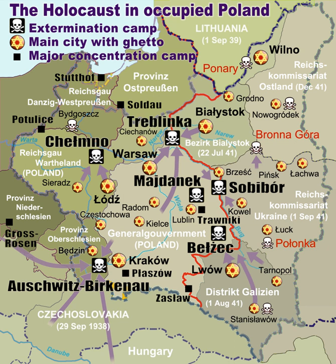Nazi Germany built extermination camps, also called death camps or killing centers, during the Holocaust in World War II, to systematically murder millions of Jews. Others were murdered at the death camps as well, including Poles, Soviet POWs, and Roma. The victims of death camps were primarily killed by gassing, either in permanent installations constructed for this specific purpose, or by means of gas vans.